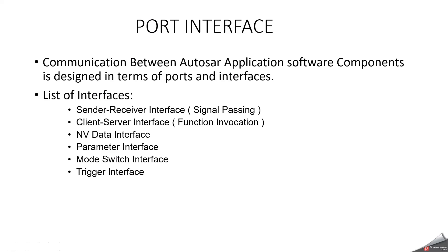Now we are going to discuss about port interfaces. When an application consists of multiple software components, it may be necessary for them to communicate — either to exchange data or to trigger some function. Some software components from different applications may also need to communicate. For example, a climate control system will communicate with an engine management system to set the engine idle speed high enough that the engine does not stall when the air conditioning compressor is switched on. Communication between AUTOSAR application software components is designed in terms of ports and interfaces. The available interfaces are: sender-receiver interface (mainly for signal passing), client-server interface (for function invocation), NV data interface (for NV data software components), parameter interface (relevant to calibration), mode-switch interface (for exchanging modes like entry, exit, transition), and trigger interface.